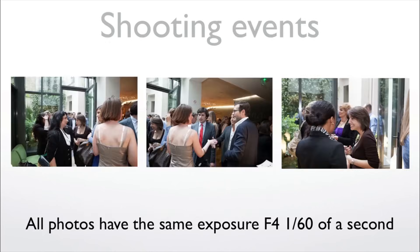Another example: shooting an event with many different light situations, where I wanted all photos to look consistent. I went into AV mode at F4 — the largest aperture on my lens at the time — pressed the shutter, saw 1/160 of a second gave a proper exposure, then dialed that into manual mode. Wherever I walked at the event, I had the same exposure on all photos, which made them uniform. The customer was pretty happy.